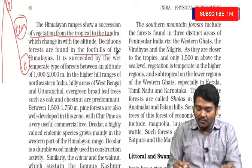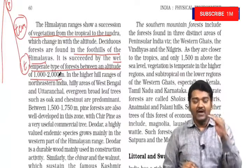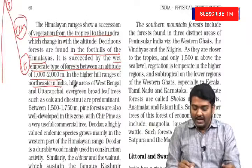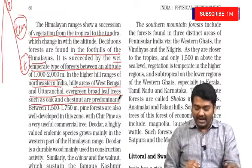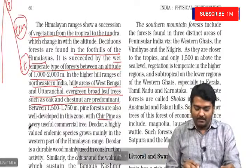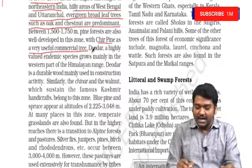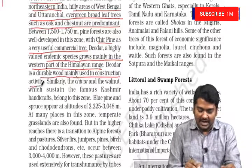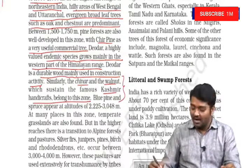Deciduous forests are found in the foothills of the Himalayas. These are succeeded by wet temperate type of forests at an altitude of 1000 to 2000 meters. In higher hill ranges, especially of northeast India, hilly areas of West Bengal and Uttaranchal, evergreen broad-leaved forests are usually present. Chirp pine is used for commercial purposes. Deodar, a highly valued endemic species, grows mainly in the western part of the Himalayan range and is durable wood mainly used in construction. Similarly, chinar and walnut are associated with Kashmir handicrafts.